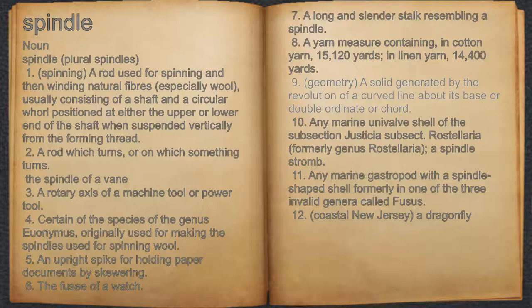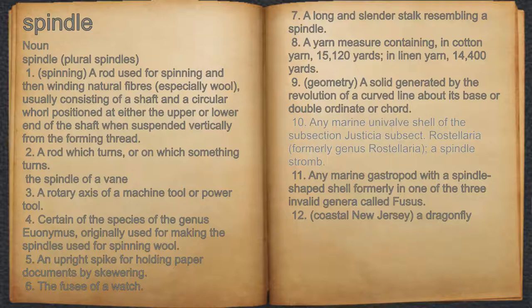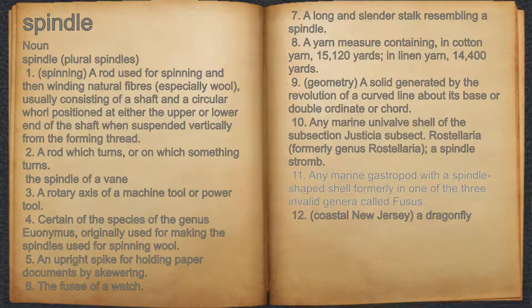9. Geometry: a solid generated by the revolution of a curved line about its base or double ordinate or cord. 10. Any marine univalve shell of the subsection Justicia subsect. Rostellaria, formerly genus Rostellaria, a spindle Straub. 11. Any marine gastropod with a spindle-shaped shell formerly in one of the three invalid genera called Fussus. 12. Coastal New Jersey: a dragonfly.